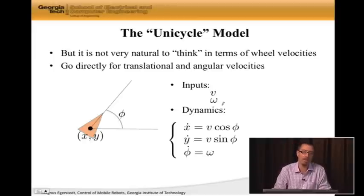X dot is V cosine phi. The reason this is right is if you put phi equal to zero, then cosine phi is one. In this case, X dot is equal to V, which means that you're moving in a straight line in the X direction, which makes sense.